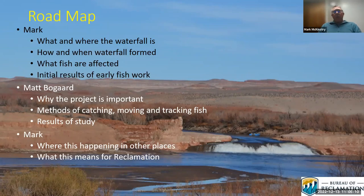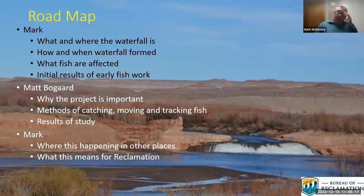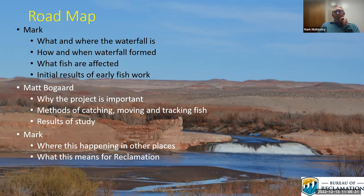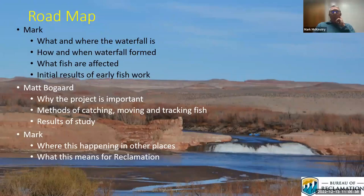I'll finish with where this is happening in some other places and what this means for the Bureau of Reclamation. One key thing to keep in mind: even though I'll be talking primarily about the Paiute Farms waterfall, which is at the base of the San Juan River near where it enters Lake Powell, Matt also did some work at a structure about 150 miles upstream called PNM — Public Service of New Mexico — a power plant weir.